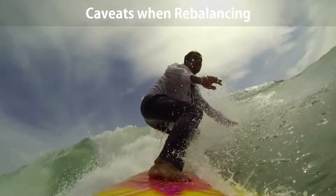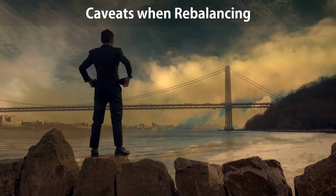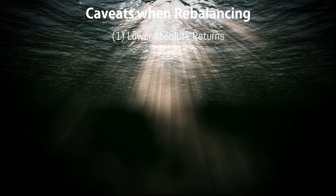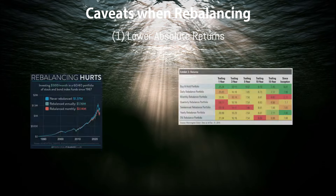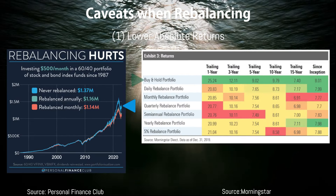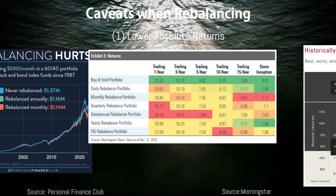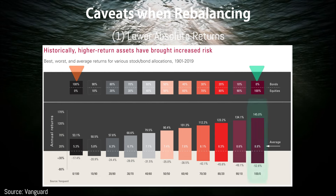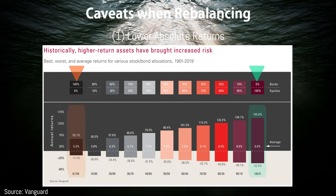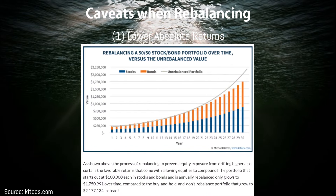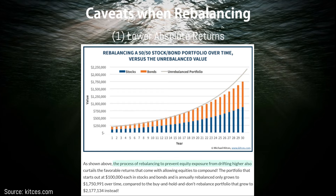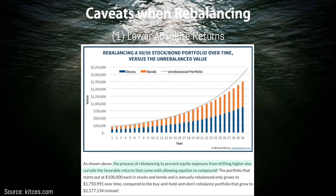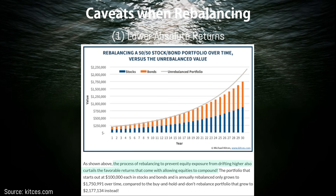So, what are some caveats with rebalancing? First, while rebalancing can lead to higher risk-adjusted returns, it's important to note that rebalancing is not about maximizing absolute returns. In fact, it often underperforms a simple buy-and-hold strategy. The reason is simple: over the long term, stocks have outperformed bonds, so continuously selling equities when they outperform means you're capping your potential returns. As Michael Kitces noted, the process of rebalancing to prevent equity exposure from drifting higher also curtails the favorable returns that come with allowing equities to compound.